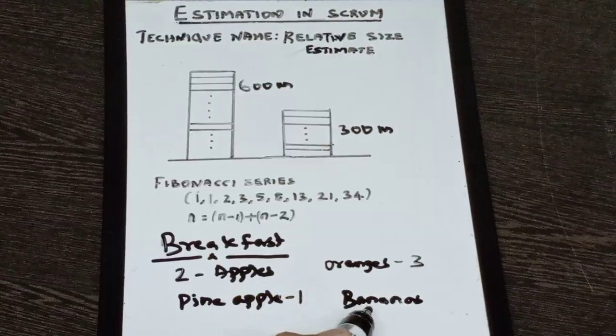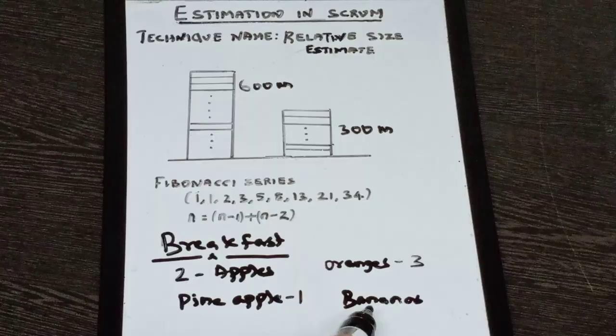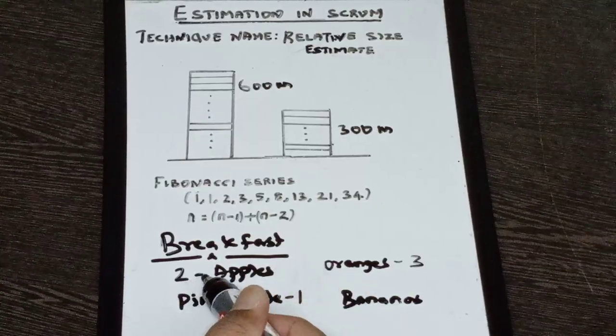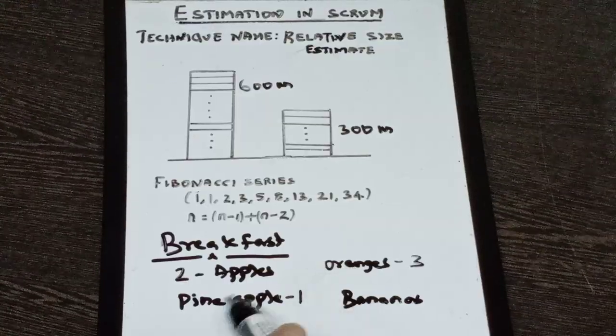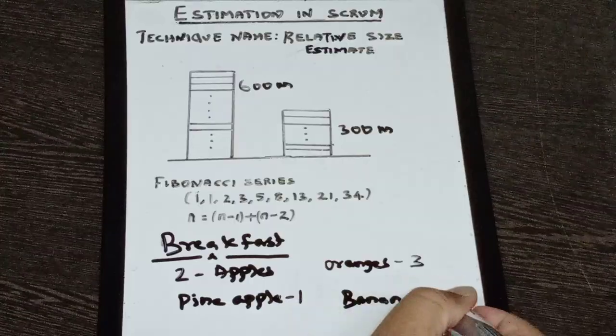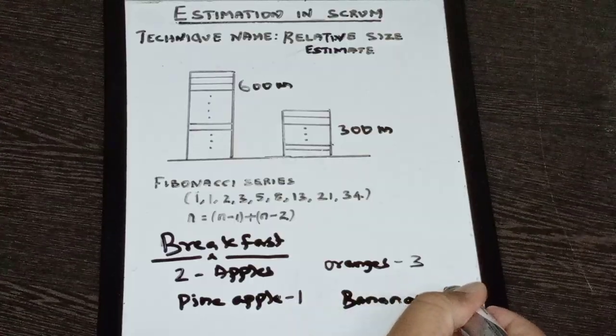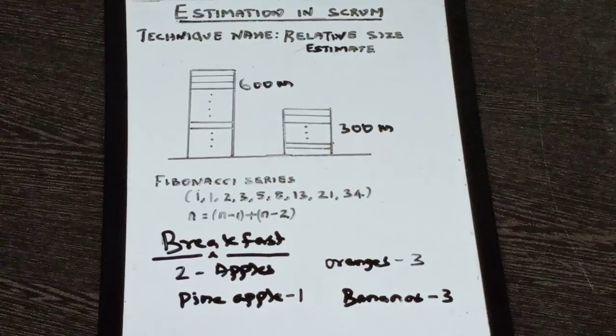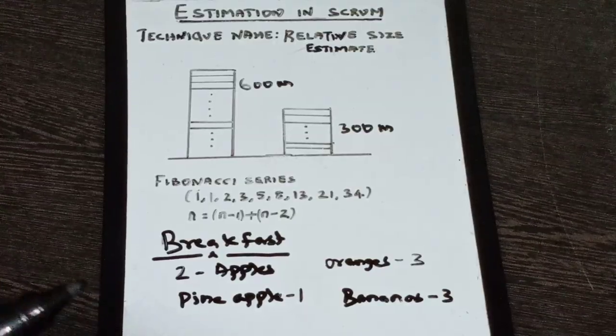Now, how many bananas you can eat? On another day, I am getting you bananas. So if I have now three references—you can eat two apples, you can eat three oranges, and you can eat one pineapple—so maybe probably you can take three bananas. Right? So this exercise is called relative size estimate.